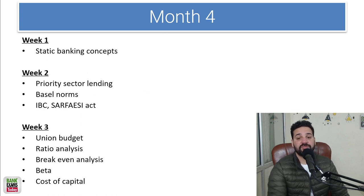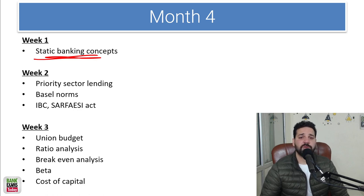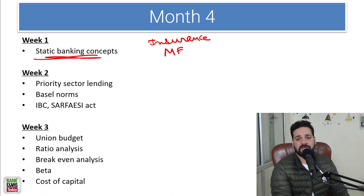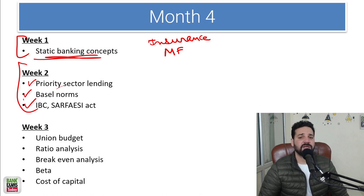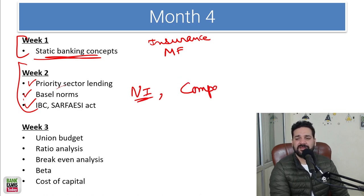In month 4, week 1, we will cover static banking concepts — topics like derivatives, mutual funds, and insurance. All the concepts of mutual fund and insurance will be covered in detail. In week 2, priority sector lending, which is a lengthy topic, will be done, along with Basel norms, IBC, SARFAESI Act, Negotiable Instruments Act, and the basics of the Companies Act. That should be sufficient for the regulatory and legal framework.